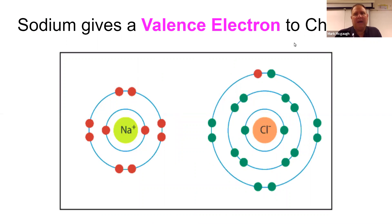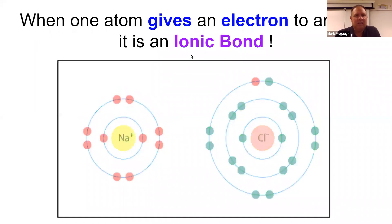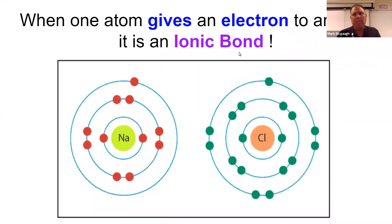Now we are going to talk about ionic and covalent bonding. Ionic bonding is when an electron literally is passed from one atom to another. This electron goes from the sodium to the chlorine. That's called an ionic bond when an electron is given away.